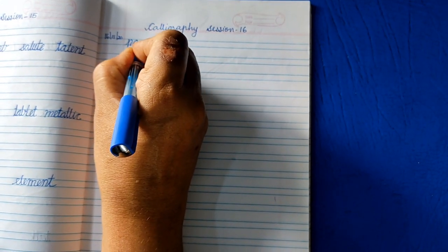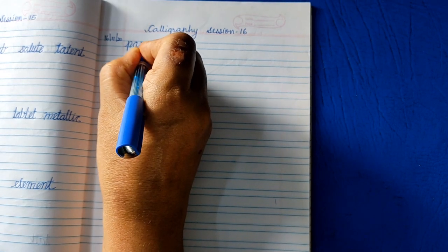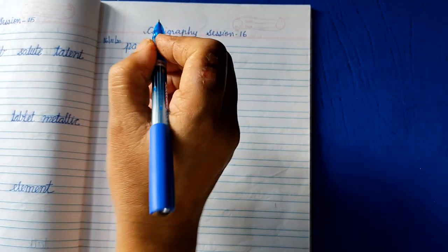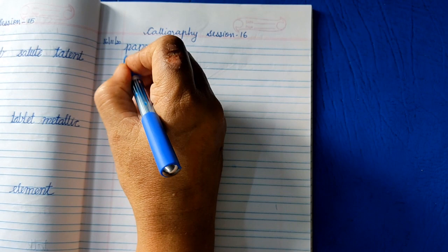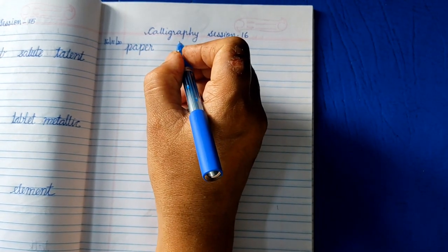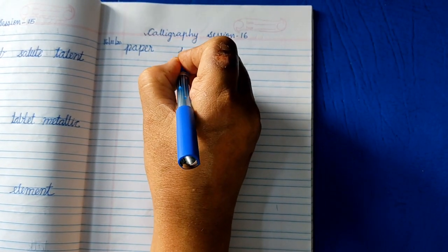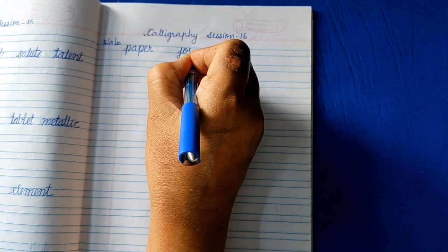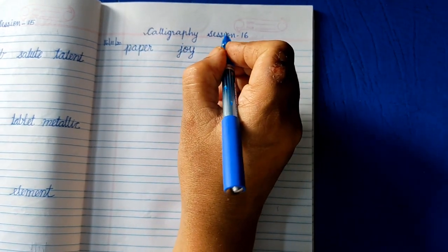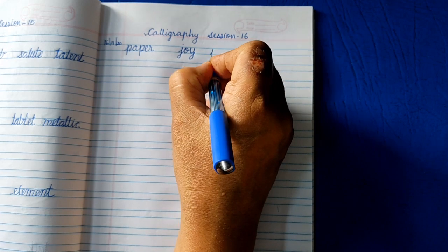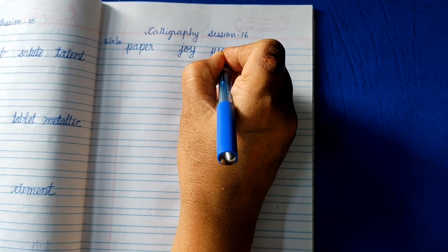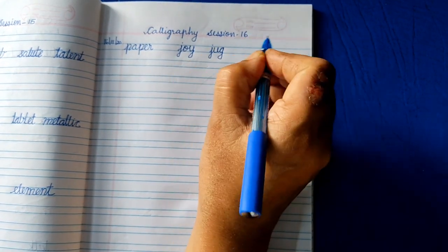Paper. P-A-P-E-R. Paper - middle zone letters with the lower zone letters. Next word is joy. J-O-Y, joy. J-U-G, jug.